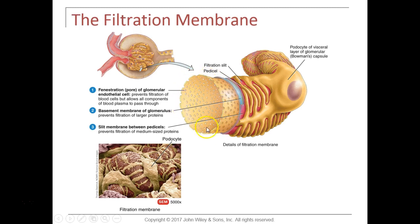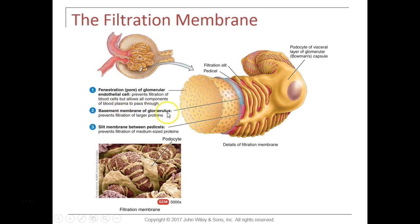Blood flows inside the capillary, and pressure forces fluid and solutes out through the fenestrations. The first part of the filtration membrane is the fenestrated endothelial cells — everything can be filtered out except blood cells (platelets, red cells, white cells) which can't fit through those holes. All the fluid, solutes, and proteins can come out, but then they hit the second part: the basement membrane of the glomerular capillary, which prevents large proteins from being filtered out.